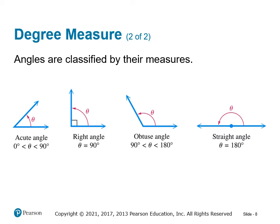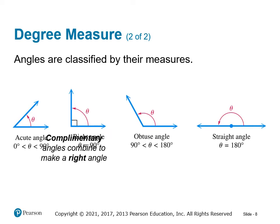Angles are classified by their measures. An acute angle is an angle between 0 and 90 degrees — not including 0 or 90. A right angle is exactly 90 degrees. Obtuse angles are between 90 and 180 degrees — a little more than a corner and not quite a straight line. A straight angle is exactly 180 degrees.